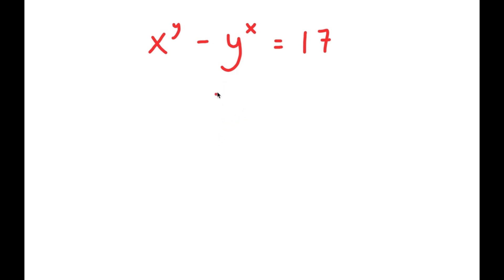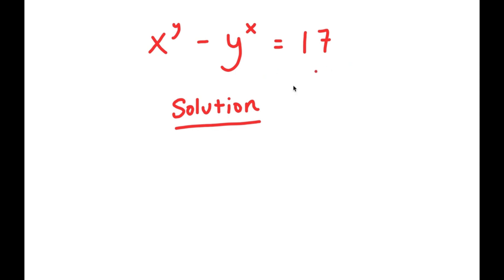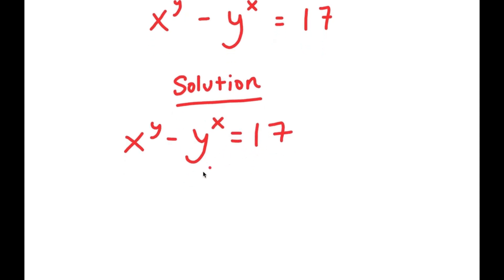In this problem, I have x to the power of y minus y to the power of x is equal to 17. To solve this problem, I'm going to first rewrite the equation. Now, to start, just by looking at this equation, what can we infer? Notice how we have x to the power of y minus something is equal to 17.